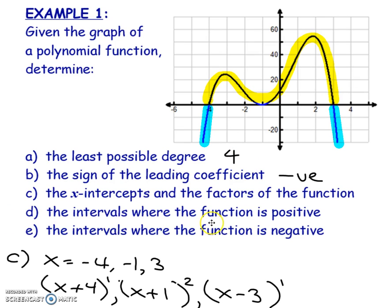If we're talking about where the function is positive or negative, that's asking where the function has positive y values and where it has negative y values. Everything in one region represents positive y values, while the two blue regions are going to be negative y values. We can use either interval notation or inequality notation to describe those regions.